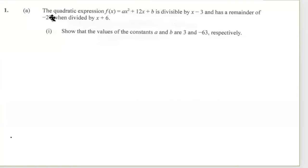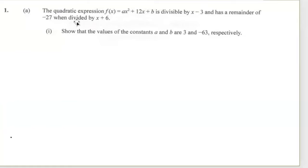The first question: the quadratic expression f(x) = ax² + 12x + b is divisible by x minus 3 and has a remainder of negative 27 when divided by x + 6. We need to find the values of a and b, which are 3 and negative 63.